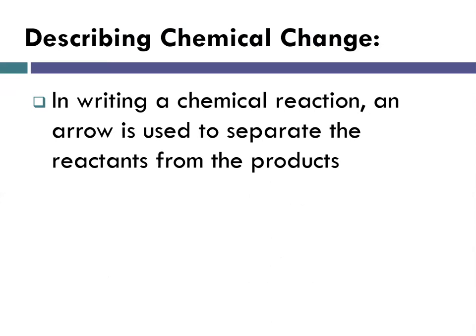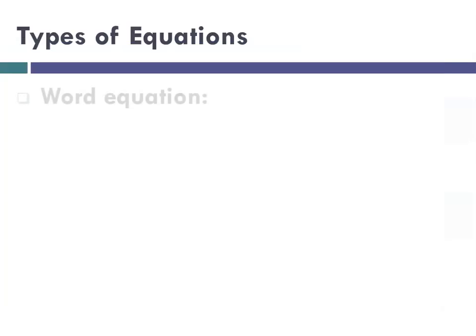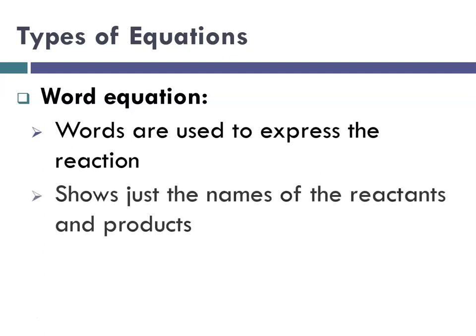So in writing a chemical reaction, an arrow is used to separate the reactants from the products. And there's a couple ways you can read that. You can say the arrow means yield, so A plus B yield, or A plus B react to produce whatever the products are. And so we start with the simplest form of chemical equation, and that would be a word equation, where words are used to express the reaction.